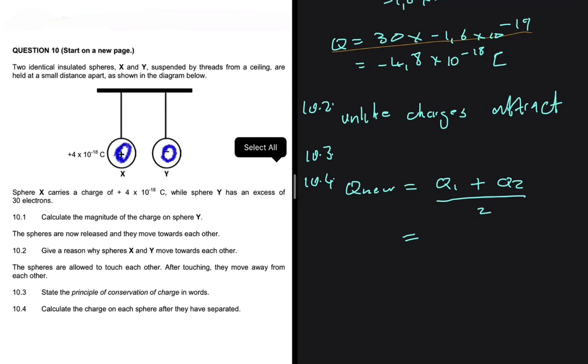But what is Q1? We can take either X or Y as Q1. It doesn't even matter. So if we take X as Q1, we're going to have 4 times 10 to the minus 18, and then plus Q2, which is Y.